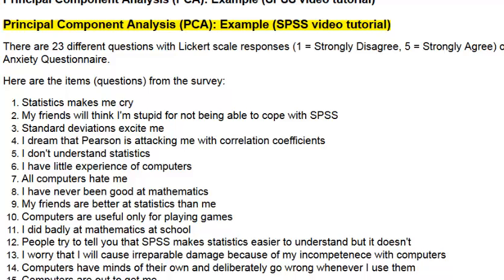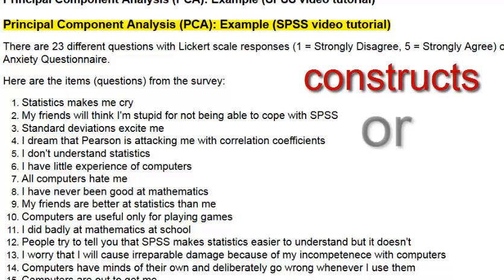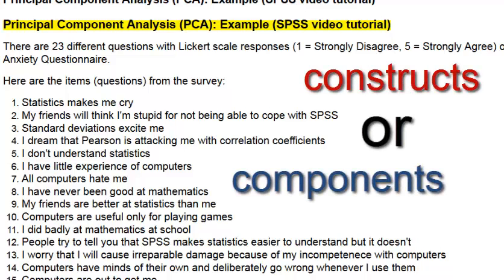PCA tries to basically reduce the number of variables that you're going to be using in a statistical analysis. From these 23 different questions, we're going to try to determine if there are any underlying themes, where several of the questions will be answered so similarly that it makes more sense to regroup them under a new underlying theme — something we're going to call a factor, or a latent variable.